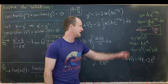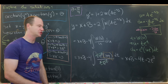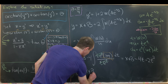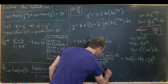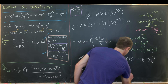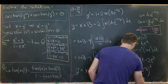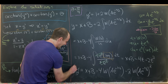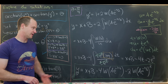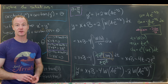Substituting back t = W(u) and u = A·e^(−x/2), the final solution is y = x + B − 4·W(A·e^(−x/2)) − 2·[W(A·e^(−x/2))]². So the solution does involve a special function, but it follows nice steps and strategies to arrive at this final closed form.